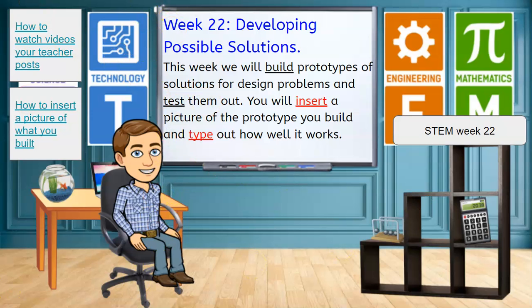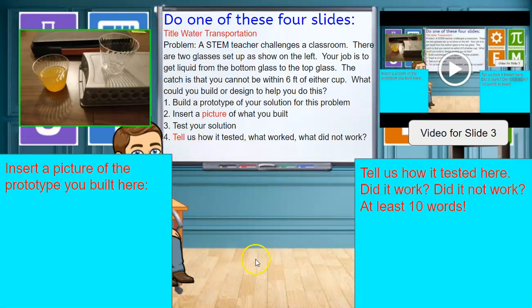All right. So there you go. That's what we're doing this week. A quick look through. This is slide three. You could do this slide. In this slide, you need to figure out how to build a device that gets water from this cup into this cup while you are standing at least six feet away. And then you need to put a picture here and type at least ten words telling us how well it works over here.